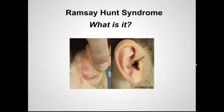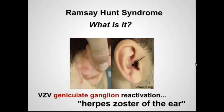So what exactly is Ramsey-Hunt syndrome? It's herpes zoster of the ear — herpes zoster oticus. It's a varicella reactivation just like herpes zoster, but it's of the geniculate ganglion, which means that it comes out in the facial nerve and eighth nerve, creating the pain and facial droop that is very characteristic of Ramsey-Hunt.